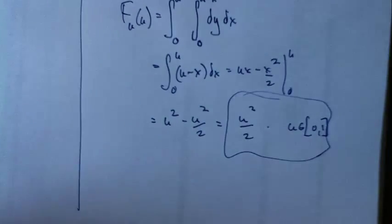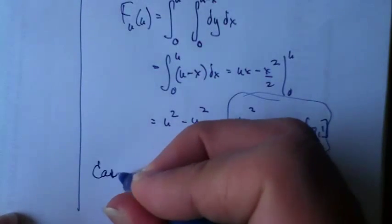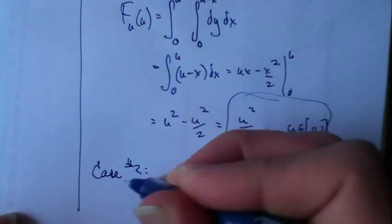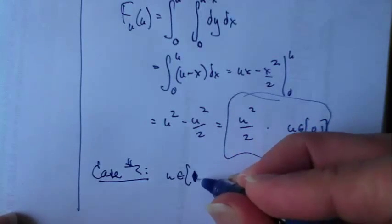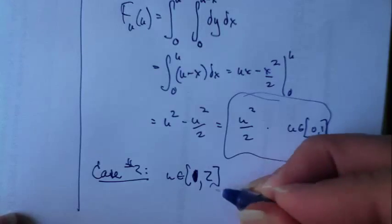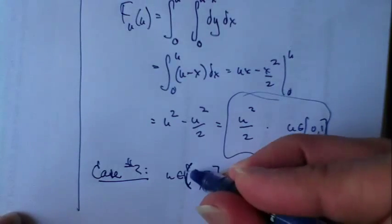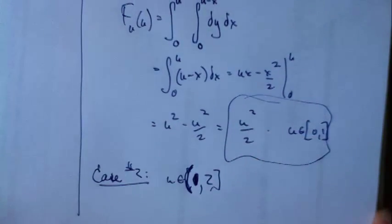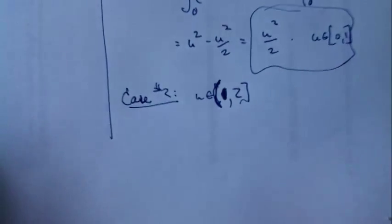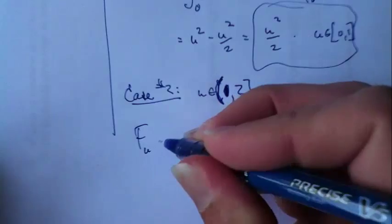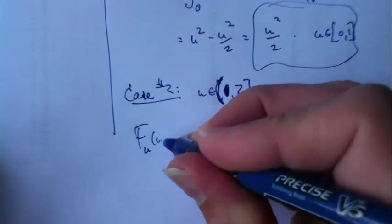Let's deal with the other case, case number 2, when u is in 1 to 2. I can say f sub u of u is - so what do we want to do here?